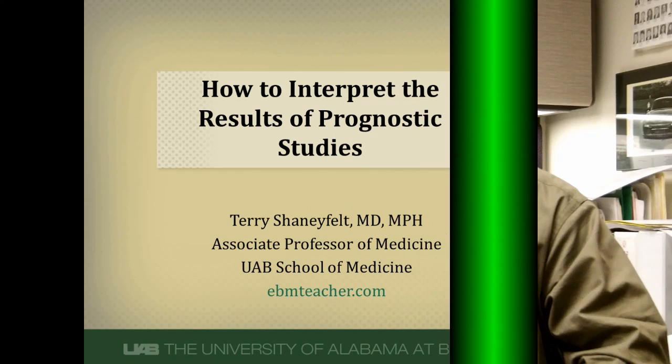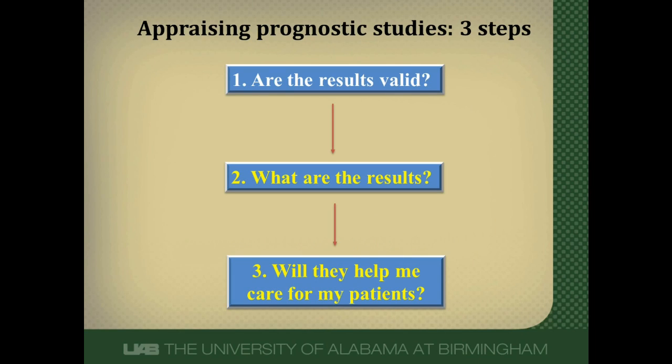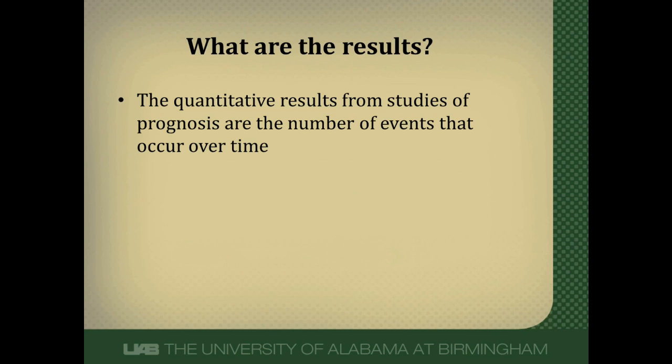Hi, Terry Schaniefeld here from UAB School of Medicine. The results of prognostic studies are often reported in three different ways. We'll go through how to interpret these figures and how to interpret the numbers in this video. We're going to discuss the last two steps of appraising a prognostic study: what are the results of the study, and will they help me care for my patient?